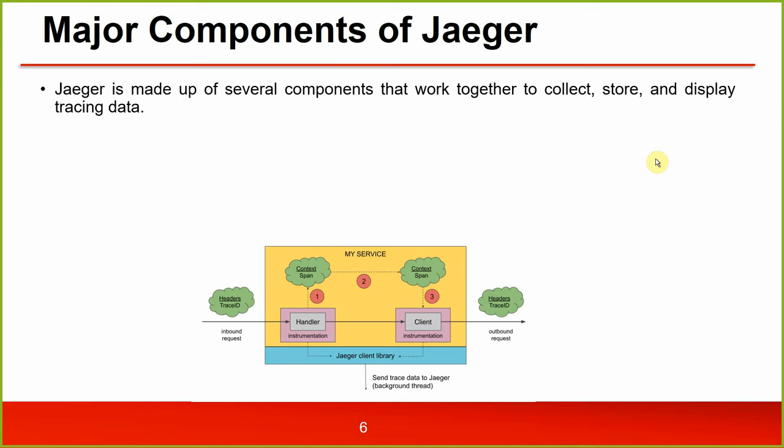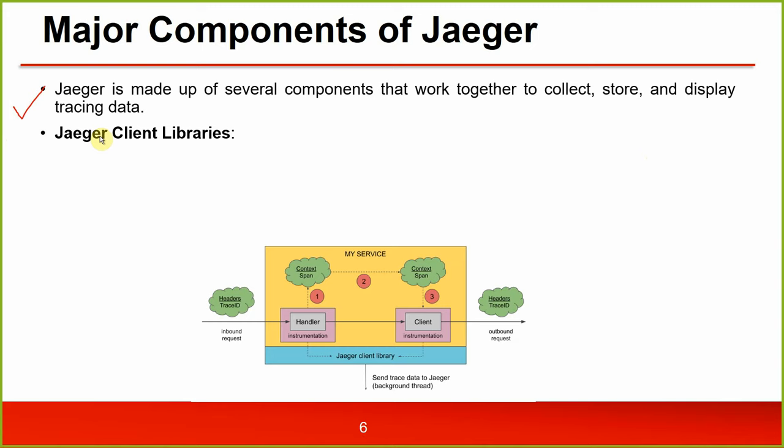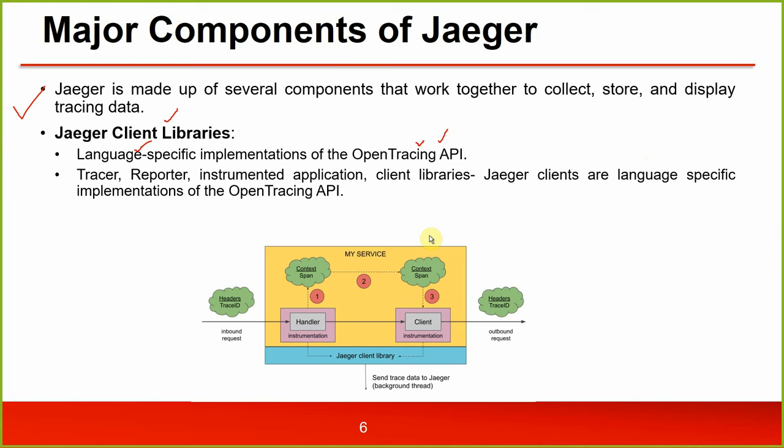Jaeger is made up of several components that work together to collect, store, and display tracing data. The first thing discussed is Jaeger client libraries - these are language-specific implementations of the OpenTracing API. The tracer reporter instruments the application. Jaeger clients are language-specific implementations of this API.